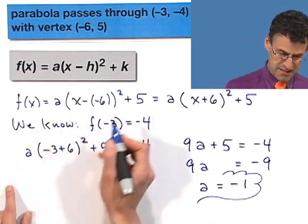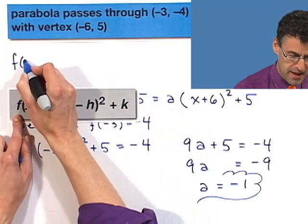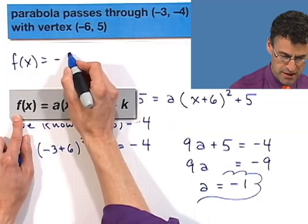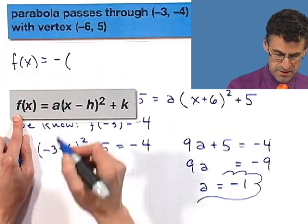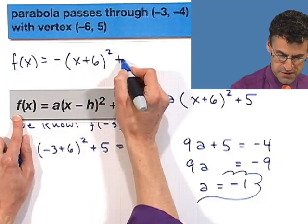So come back, and I see that the formula is f of x equals a, which is negative 1, I'll just put a negative sign, times x plus 6 squared plus 5.